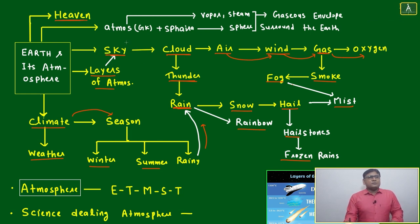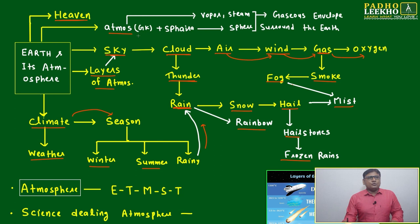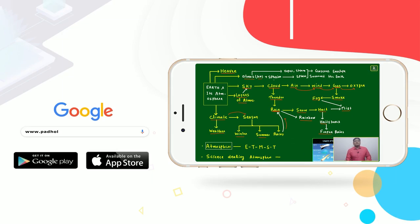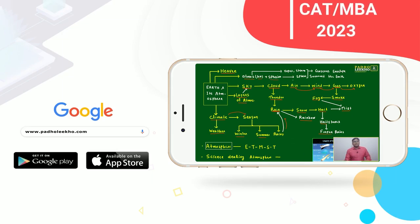The atmosphere — we can call it heaven. The root word is 'atmos,' a Greek word, and 'sphere.' Finally, the atmosphere is a gaseous envelope surrounding the Earth.